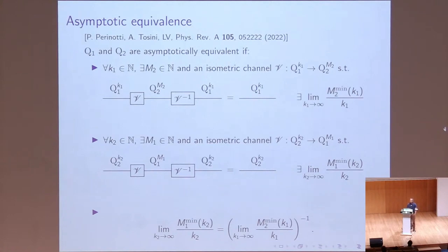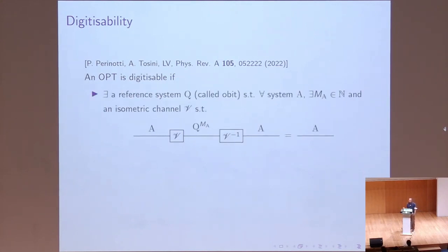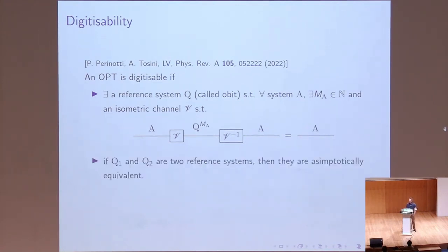With this notion in hand, we can define what is a digitizable OPT — the class of theories in which we can define the information content. An OPT is digitizable if, first, there exists a reference system Q such that for any system A of the theory we can find an integer M such that A can be isometrically encoded on M copies of Q — this operational bit. Second, if there are two such systems, we require them to be asymptotically equivalent.